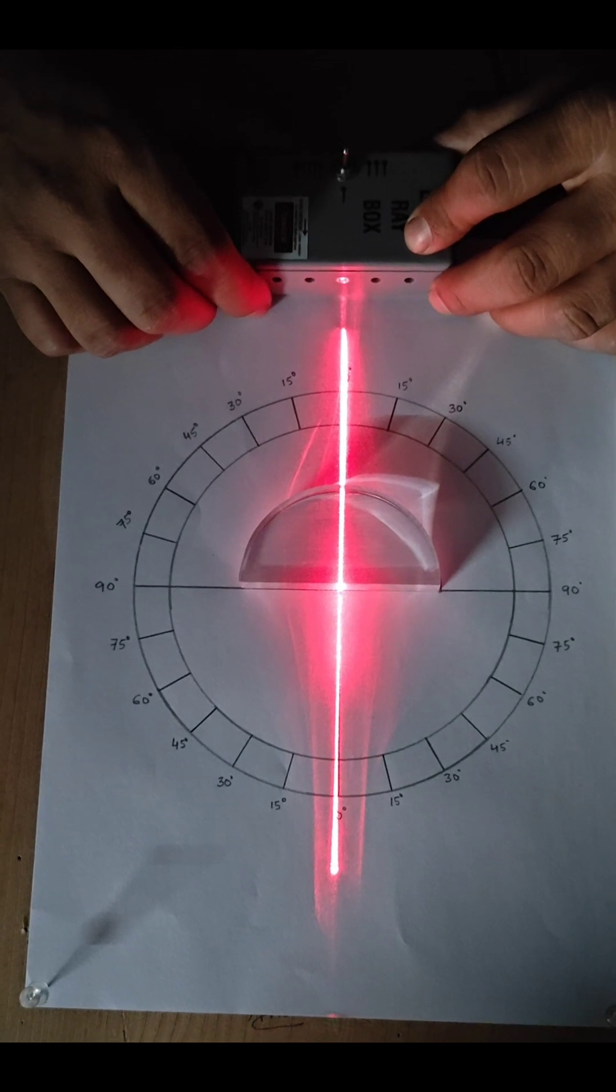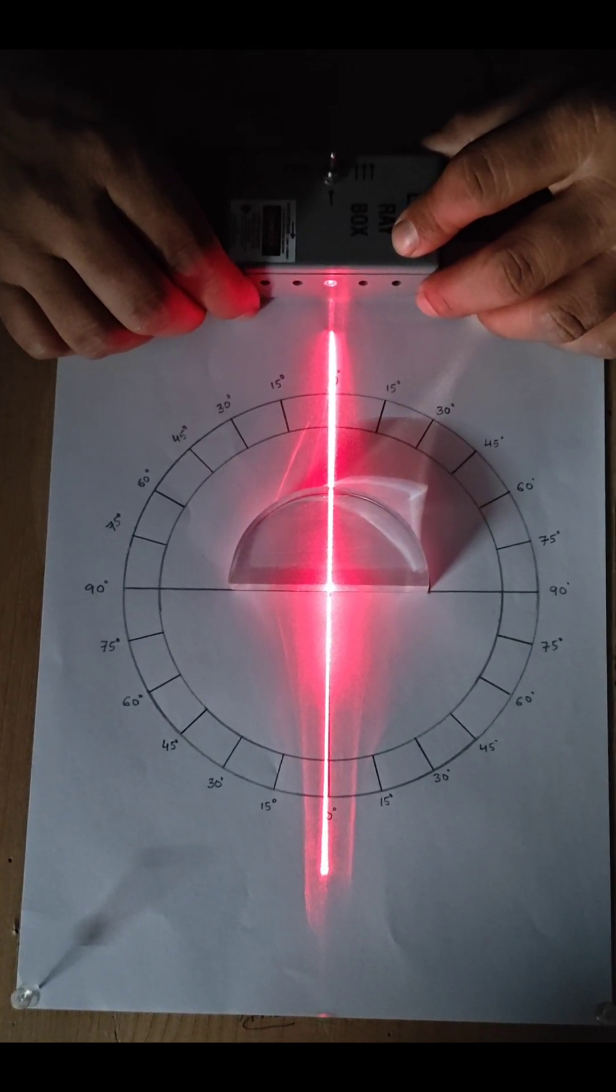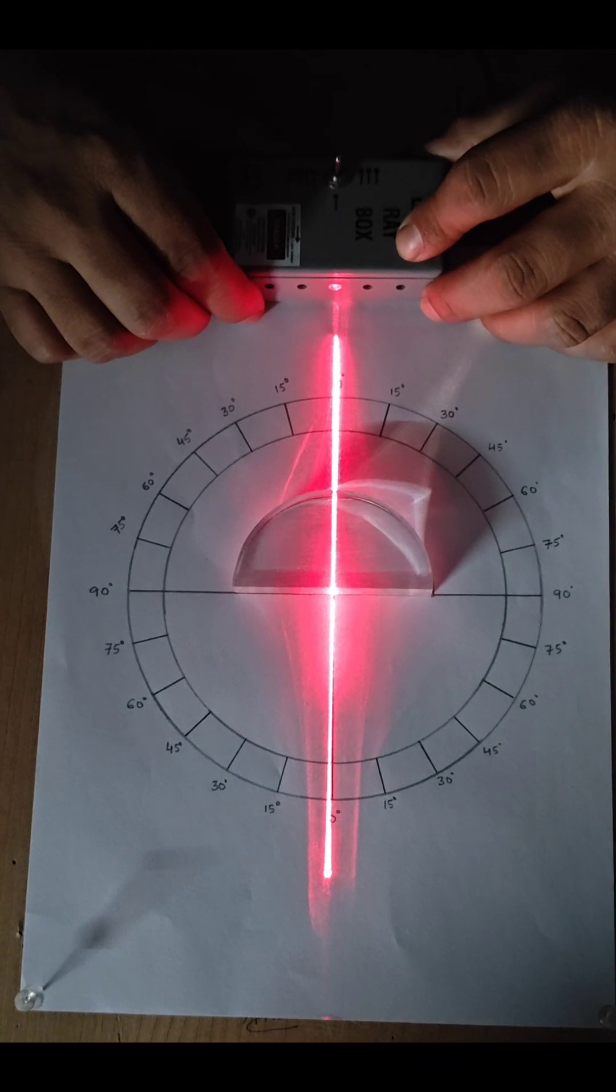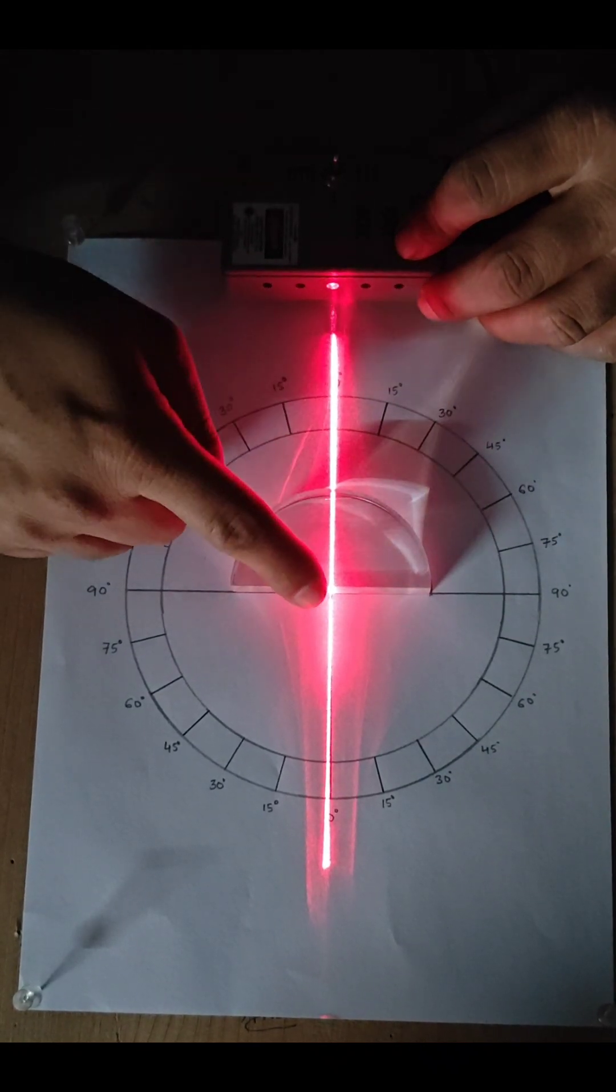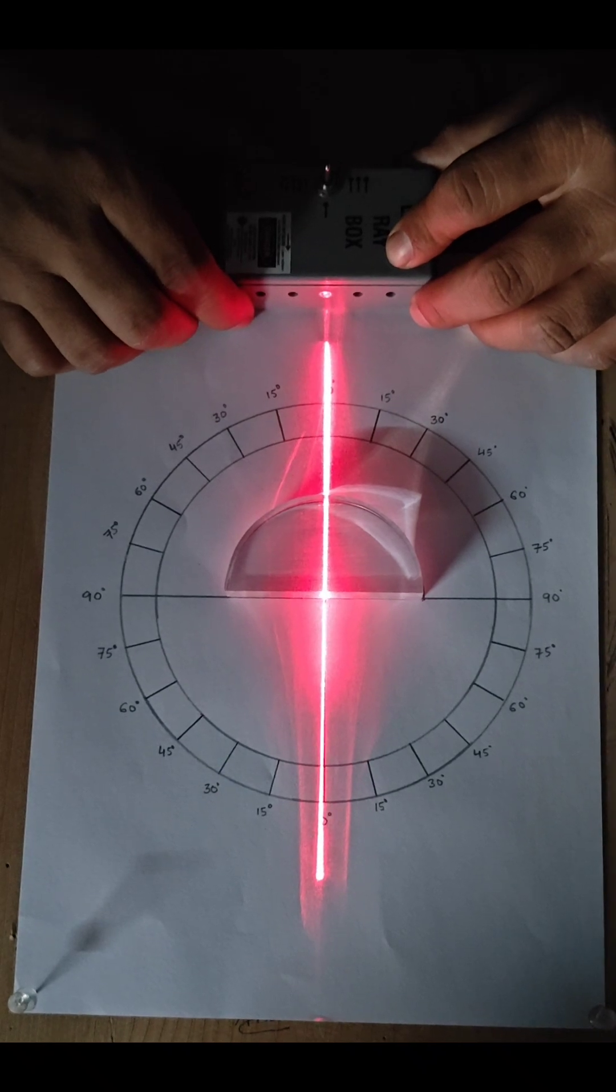If the ray of light is at 0 degree angle of incidence, then the ray of light is passing without any refraction taking place. So, here there is no refraction, and the ray of light is passing without any refraction taking place.